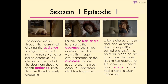As the camera moves through the house slowly, it allows the audience to digest the scene in much the same way a police detective would. This makes the shot of the dog more shocking when they see it — equally, the high angle when looking down at the other victims makes us feel more dominant and adds to the overly dramatic sense. Wilson's character, when we finally meet her, seems very small and vulnerable due to her position hiding behind the chair. The blood on her hands makes her seem like she's reacted to the scene, but could suggest she's had a hand in what happened — which, as we get further into this episode, we realize is the case.